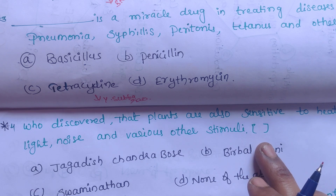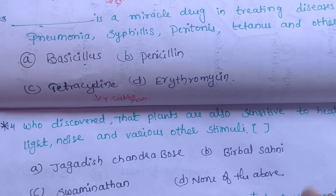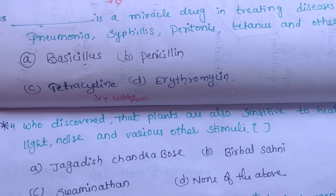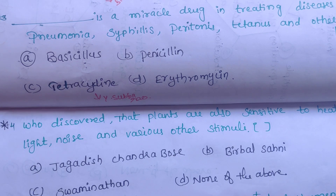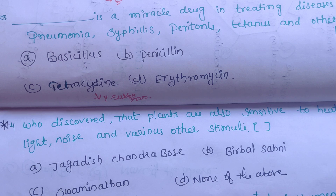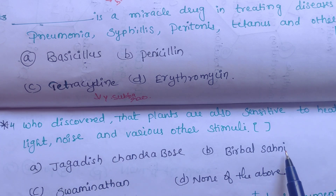According to some scientists, plants are also sensitive to light, noise, and various other stimuli — just like humans and animals react to sound and light. The options are: A. Jagadish Chandra Bose, B. Birbal Sahni, C. Swaminathan, D. None of the above. Swaminathan did many investigations in the agriculture field and discovered hybridized seeds.